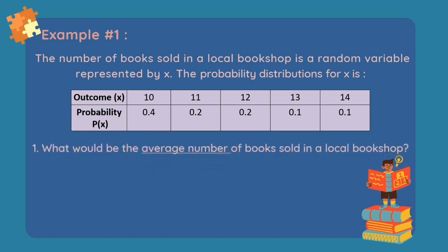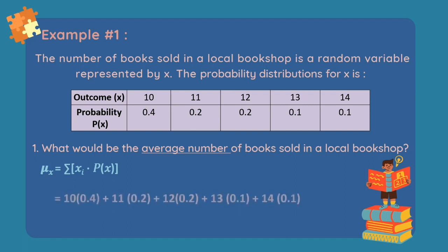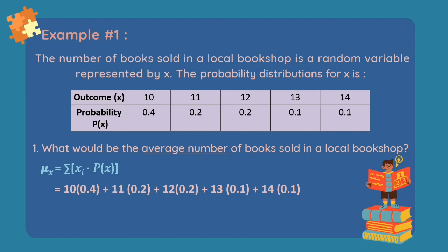Question number 1: What would be the average number of books sold in a local bookshop? It is asking for the average number, therefore we will use the formula of the mean. We will multiply the value of the random variable by its corresponding probability, then get the summation. Applying the formula: 10×0.4 + 11×0.2 + 12×0.2 + 13×0.1 + 14×0.1. Our mean is equal to 11.3.